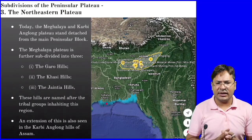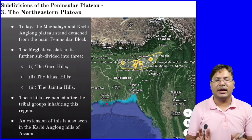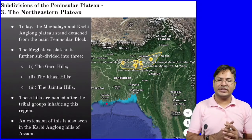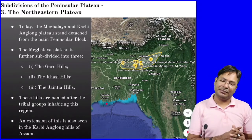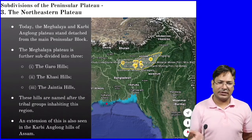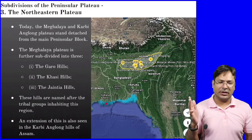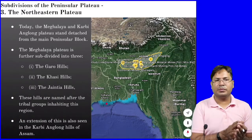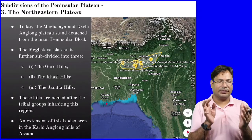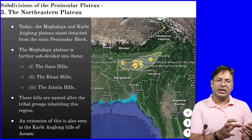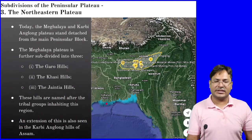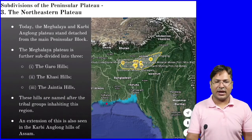Today the Meghalaya and Karbi Anglong Plateau is still detached from the Main Peninsular Plateau. Because of the depression and the fault between the two plateaus, it looks detached — it is different and remains separate today.